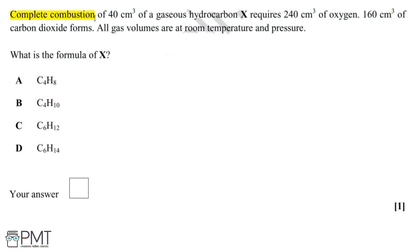This question follows the complete combustion of a gaseous hydrocarbon and uses gas volumes to identify the formula of hydrocarbon X. We've been told that we've got 40cm³ of our hydrocarbon and that this requires 240cm³ of oxygen and produces 160cm³ of carbon dioxide.